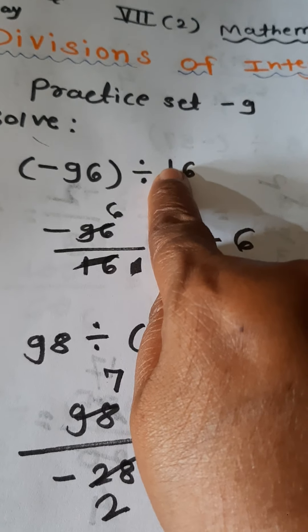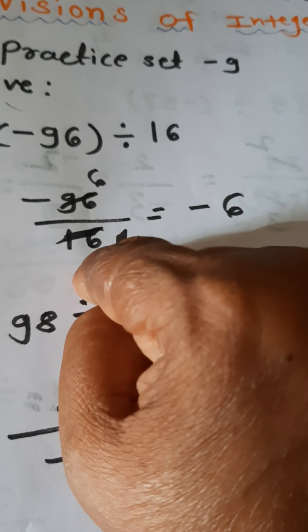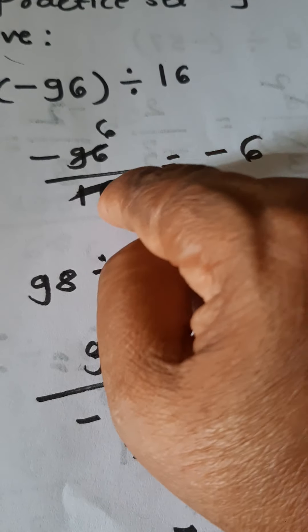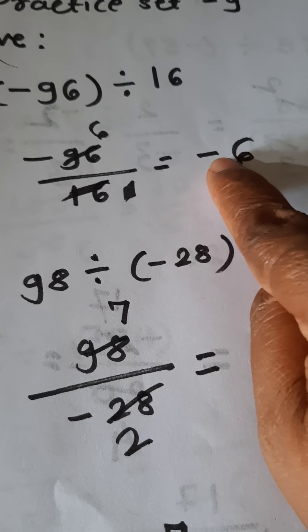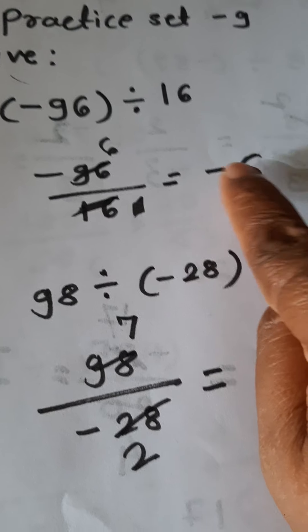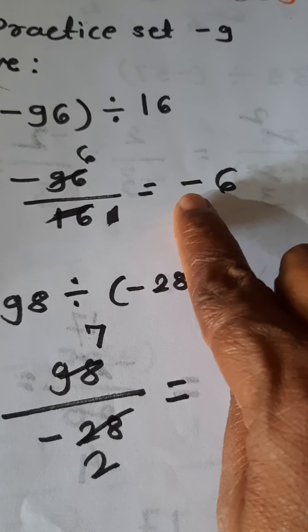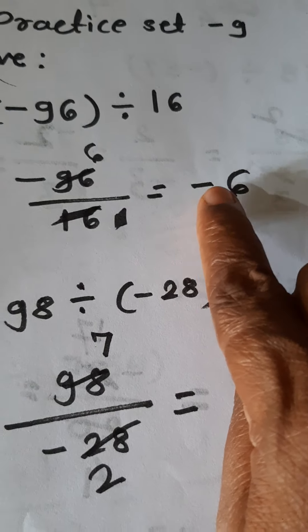Now we turn towards the division of integers. Look at Practice Set 9. First example: negative 96 divided by 16. Here also one number is positive and one is negative, so the answer is negative. Arrange this problem vertically.